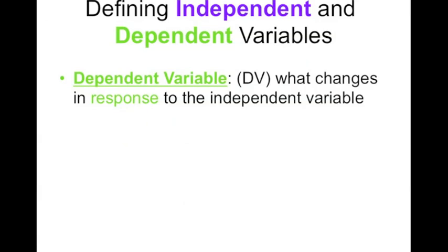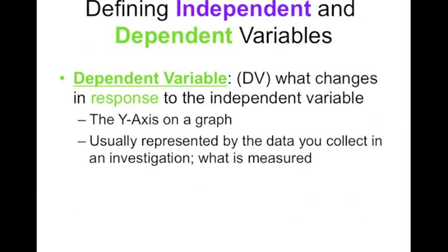The dependent variable is what changes in response to the independent variable, which is why we often call it the effect. It goes on the y-axis of a graph, and it's usually represented by what sort of data you're actually collecting. What is it that you're going to measure? And you can measure multiple things, but it's usually what we're going to be collecting. Think about that running experiment. If the independent variable, what we're testing, is what the runners are going to drink, the dependent variable is what we're going to measure to see if it has an effect. What we would measure is how quickly they would run.